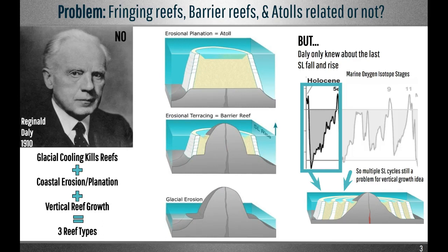During Darwin's day, most accepted the vertical growth argument, but were unhappy with postulating subsidence in all areas where barrier reefs and atolls existed. So in 1910, Reginald Daly proposed that it was the ice age and sea level changes that caused different reef types to develop.